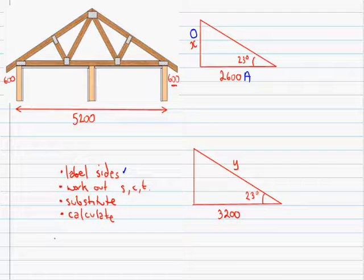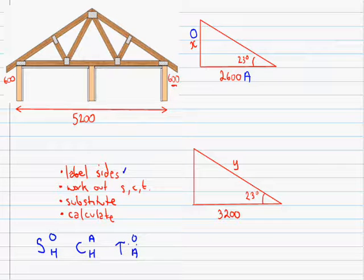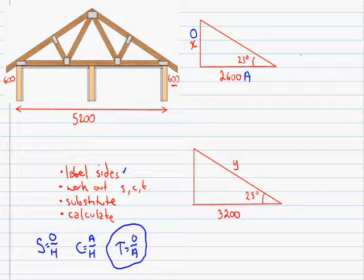I'll label the sides for this one here. Then we have to work out whether we're using sine, cos, or tan. I had my way of remembering this: some old hags can't always hack their old age. We're going to be looking for the function that uses both the opposite and the adjacent, so for this one, that's going to be tan. Tan theta equals the opposite over the adjacent.